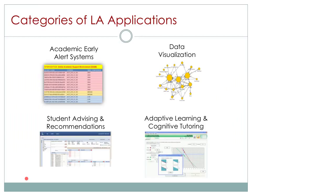In terms of the peaks on the learning analytics landscape today, the one most people are most familiar with is academic early alert systems. These are systems using business intelligence and predictive analytics tools to identify students who are at risk of not completing a course or a degree program, and then providing interventions to help those students be successful. This is the specific work we were pioneering at Marist through the OAI project.